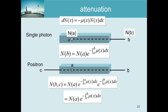For PET, a coincidence is only detected if both photons arrive, since we check whether two photons arrive at the same time. With a point source emitting one photon toward detector B and one toward detector C, we compute the probability that each photon reaches its detector - exactly the same formula as before, with mu reflecting each photon's energy. The total coincidences detected is proportional to the number of photon pairs, times the probability the first photon arrives, times the probability the second arrives - assuming the two events are independent.